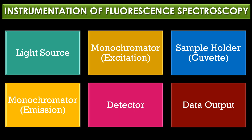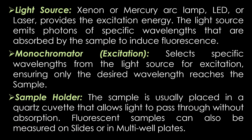The instrumentation of fluorescence spectroscopy contains six major parts: light source, excitation monochromator, sample holder, emission monochromator, detector, and data output. The light source — usually a xenon or mercury lamp, LED, or laser — provides the excitation energy. It emits photons of specific wavelengths that are absorbed by the sample to induce fluorescence.